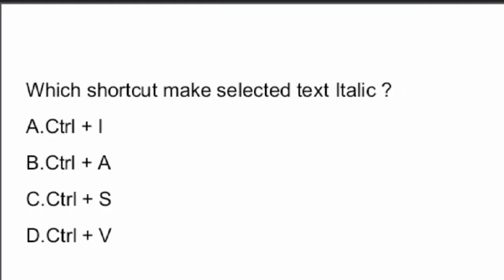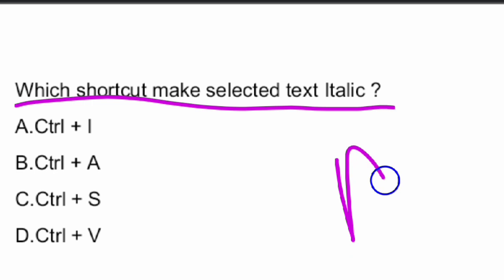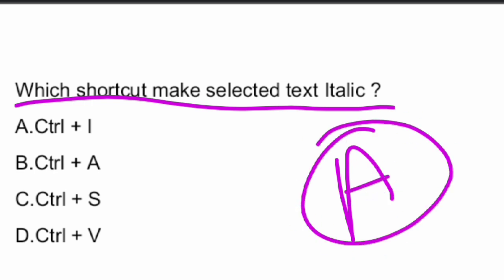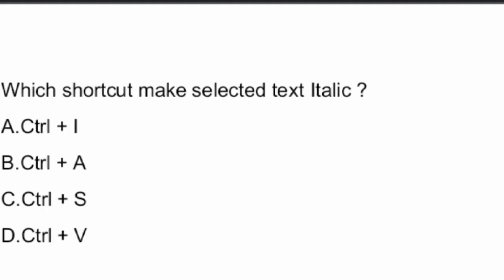Next question: Which shortcut key makes selected text italic? The answer is Option A — Control plus I. Control+I is the shortcut key to make selected text italic.